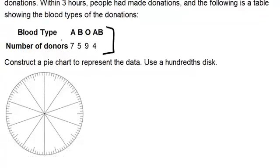This table tells us the numbers of people who donated blood type A, blood type B, blood type O, and blood type AB. But it doesn't tell us the percentage of people who donated blood type A, etc. So we have to first figure out those percentages so that we can make our pie chart. So first figure out how many donations there were total. So we're going to add up 7 plus 5 plus 9 plus 4. And what we get is 25 donations total.